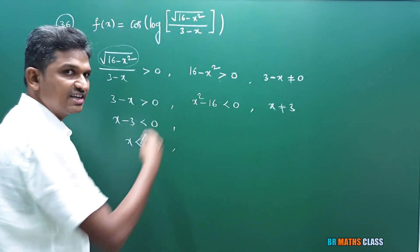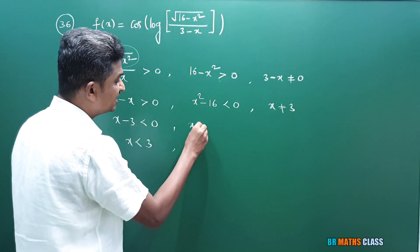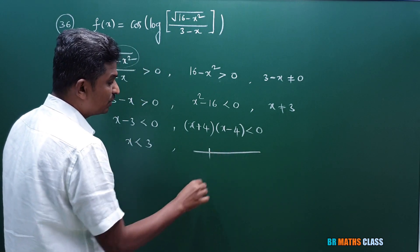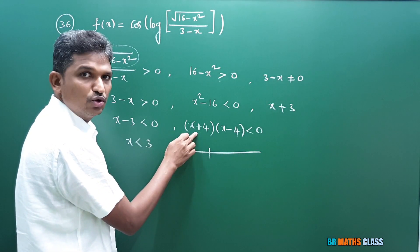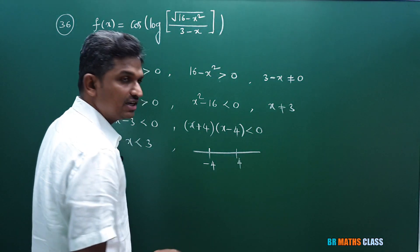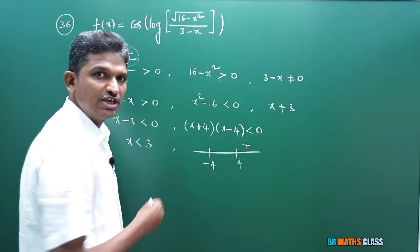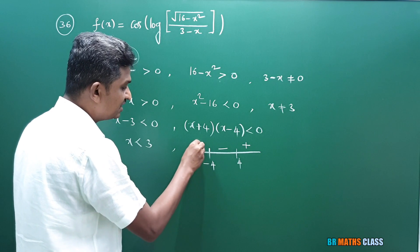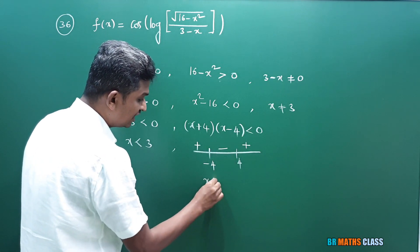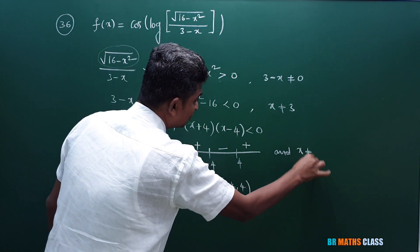To find x values satisfying x² − 16 < 0, we write it as (x + 4)(x − 4) < 0. Marking x = −4 and x = 4 on the number line and using the wavy curve method — keeping plus in the rightmost region and alternating signs — we want where the expression is negative. So x belongs to the open interval (−4, 4), and x cannot be equal to 3.